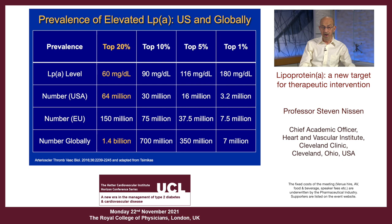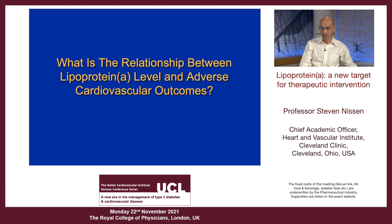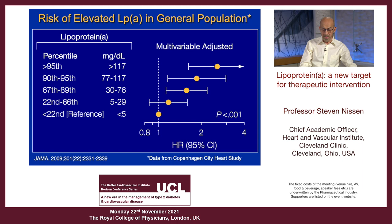What is the relationship between lipoprotein A level and adverse cardiovascular outcomes? Here we see from the Copenhagen City Heart Study classical information. If you're above 117 milligrams per deciliter, you've got nearly a three-fold increase in cardiovascular risk. Even in the 77 to 117 category, you have a two-fold increased risk. And those people below the risky threshold, in the 30 to 76 milligrams per deciliter range, still have more than a one-and-a-half-fold increased risk.